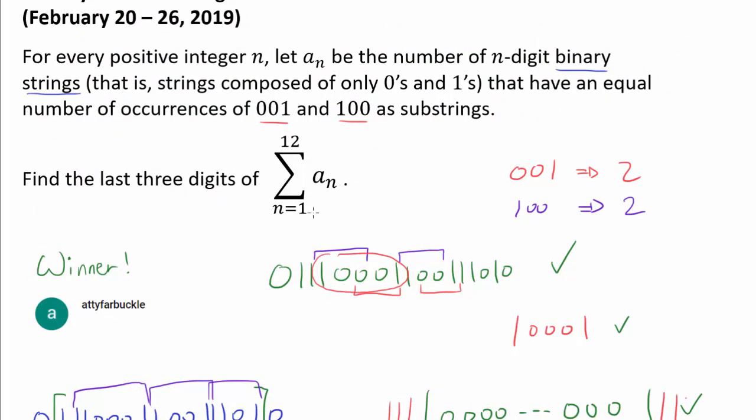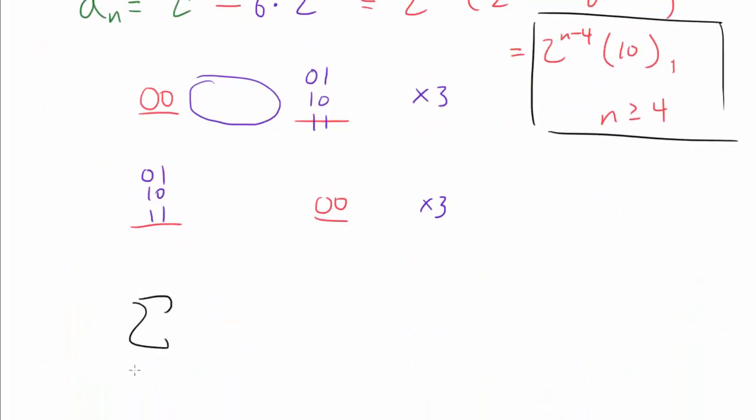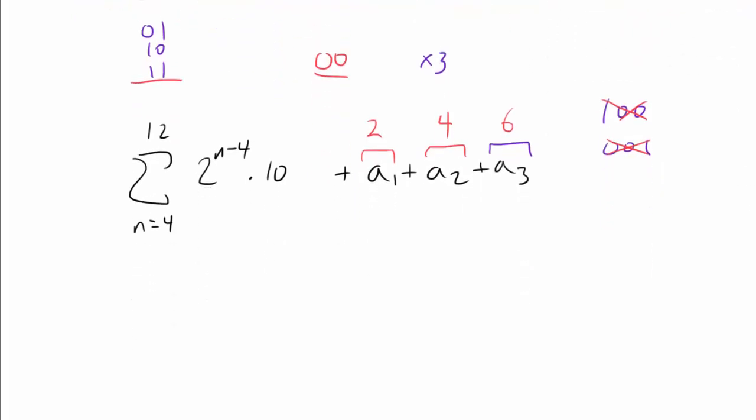Now let's finish the problem. We wish to find the sum of a_n from 1 to 12. We know how to sum it up from n equals 4 to 12. That's simply 2^(n-4) times 10. So to this, we gotta add a_1, a_2, and a_3. A_1 is going to be 2, a_2 is going to be 4, because every single binary string of 1 digits long and 2 digits long are going to count. But for 3 digits long, we want to make sure we don't count 100 and 001. So a_3 is 6, because there are 8 three-digit binary strings, and we are taking 2 away.